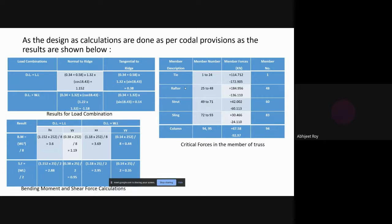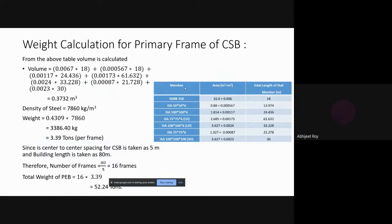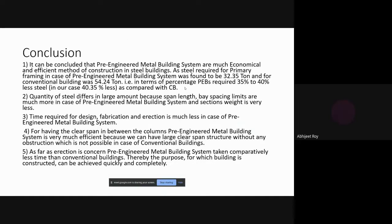All load combinations, critical forces, bending, and shear calculations are done as per code. Weight calculations similarly use area and length of each member from software, with steel density giving a weight of 3.39 tons per frame. With a spacing of 5 meters between frames, we need 16 frames for the conventional structure, giving a total weight of 54.24 tons. We conclude that pre-engineered buildings are much more economical and efficient.